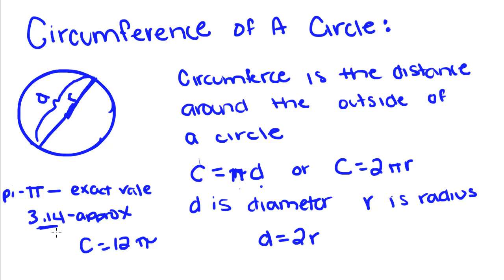Pi is a non-repeating decimal, so it just keeps going on and on forever. So there's no way to get exactly circumference unless you write it like this. But if you wanted to approximate it, you'd take 12 times 3.14, and if you plug it into a calculator, you'll get 36.68.